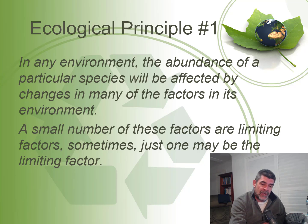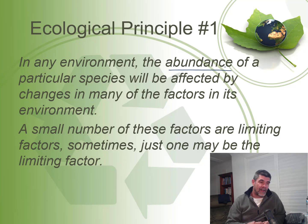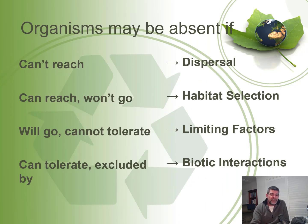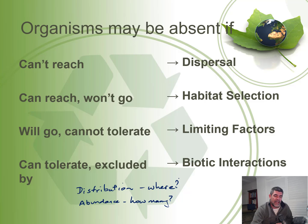We're going to look at the concepts of distribution and abundance. Distribution is where something is found, and abundance is how many there are. These are affected by a number of different types of factors, including limiting factors. There are two key questions in ecology: are organisms present in certain places, and if not, why not? And if they are present, is there anything limiting their abundance or population numbers, or are their numbers growing out of control?